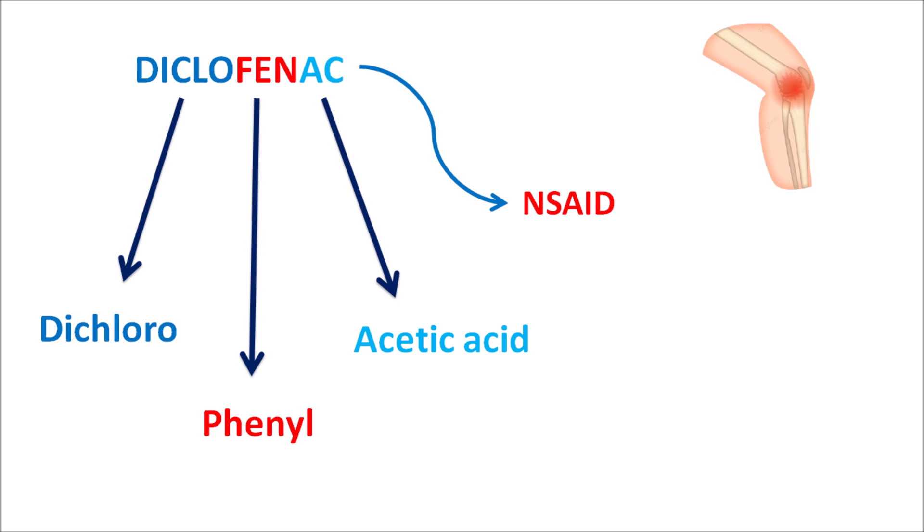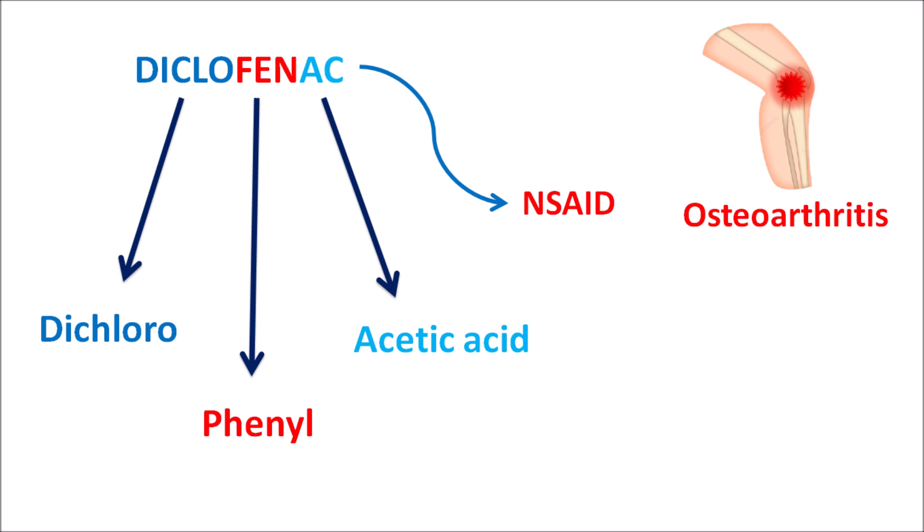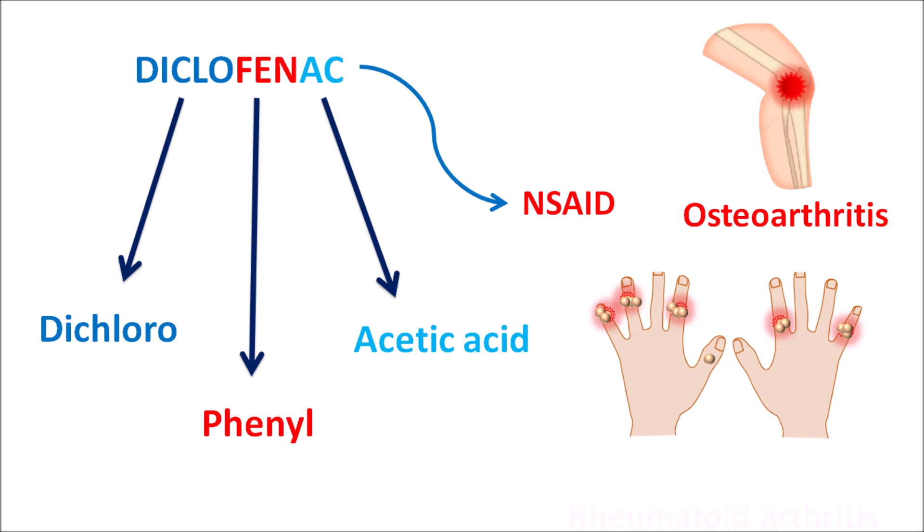Diclofenac can be used as an analgesic, anti-inflammatory, and antipyretic. It can be used in various conditions such as osteoarthritis, which produces joint pain and inflammation. This drug can also be used in the management of rheumatoid arthritis, which is an autoimmune disorder associated with progressive inflammation. It is also used for ankylosing spondylitis, and even as an antipyretic to reduce fever.